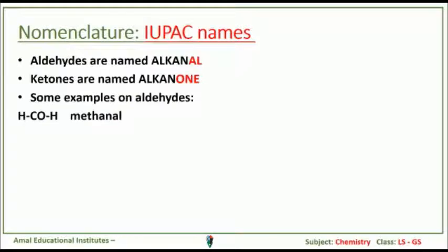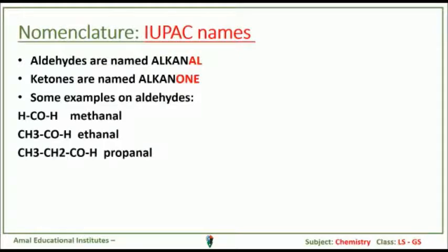Some examples on aldehydes. HCHO, the first aldehyde, is called methanal. The second aldehyde is ethanal: CH3-CHO. The third aldehyde is propanal: CH3-CH2-CHO.